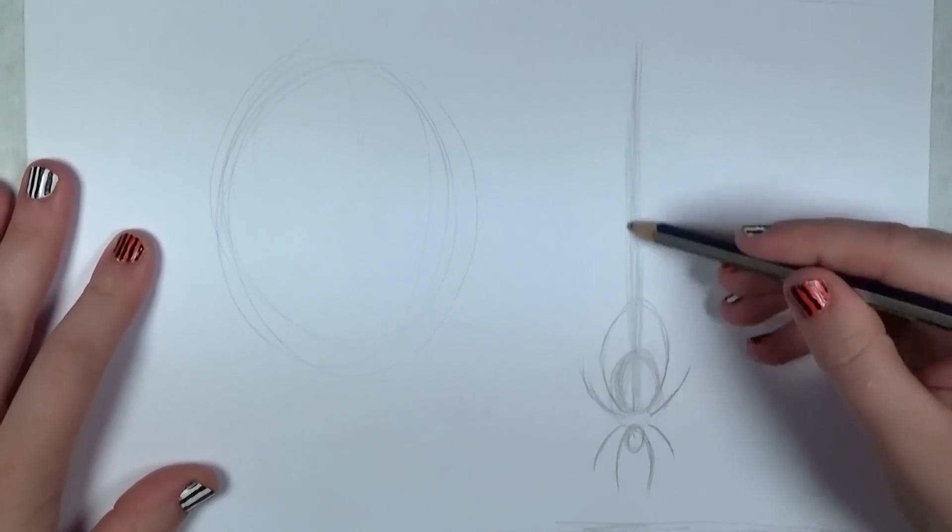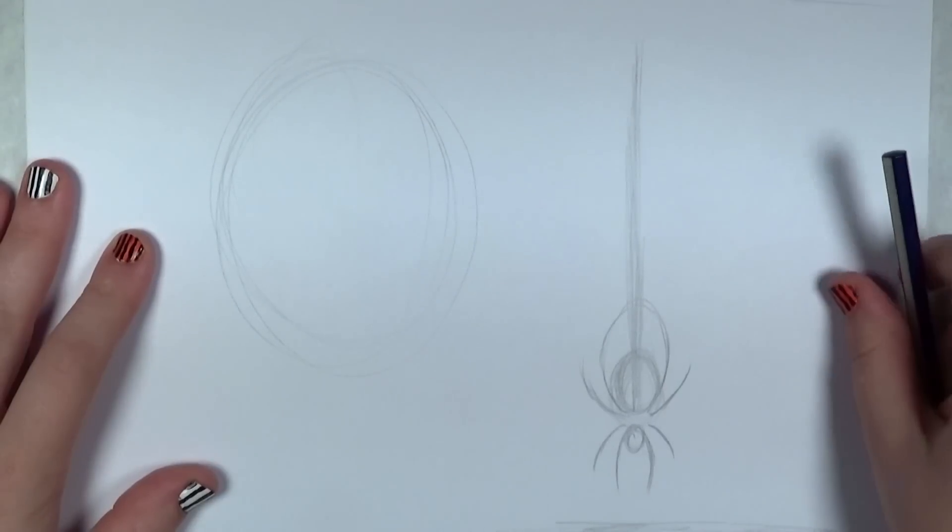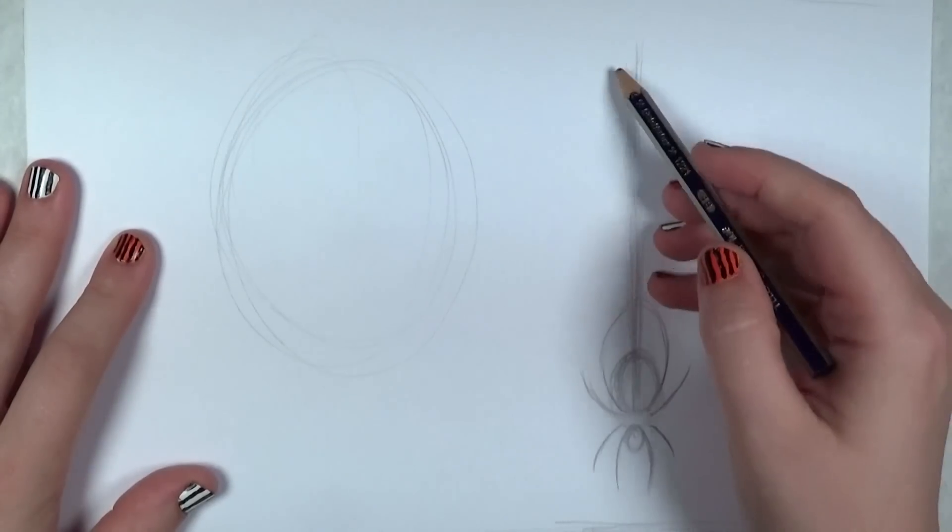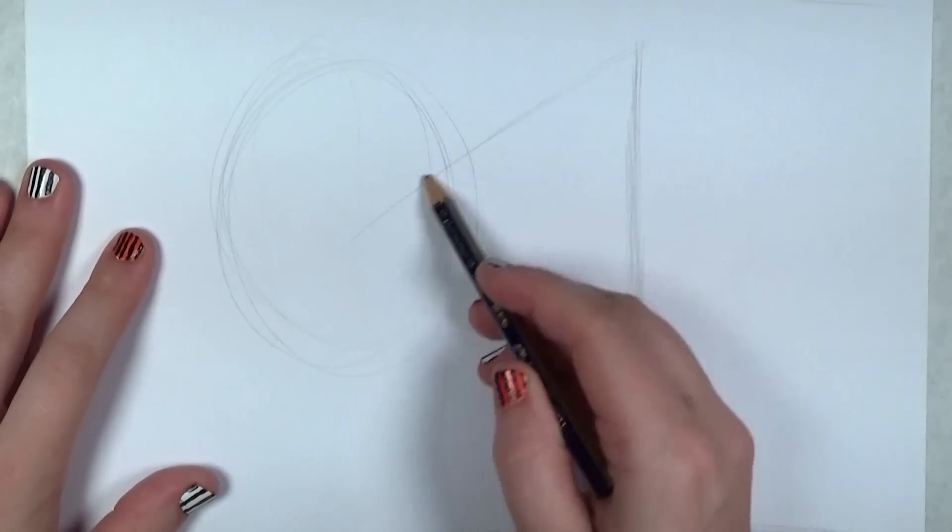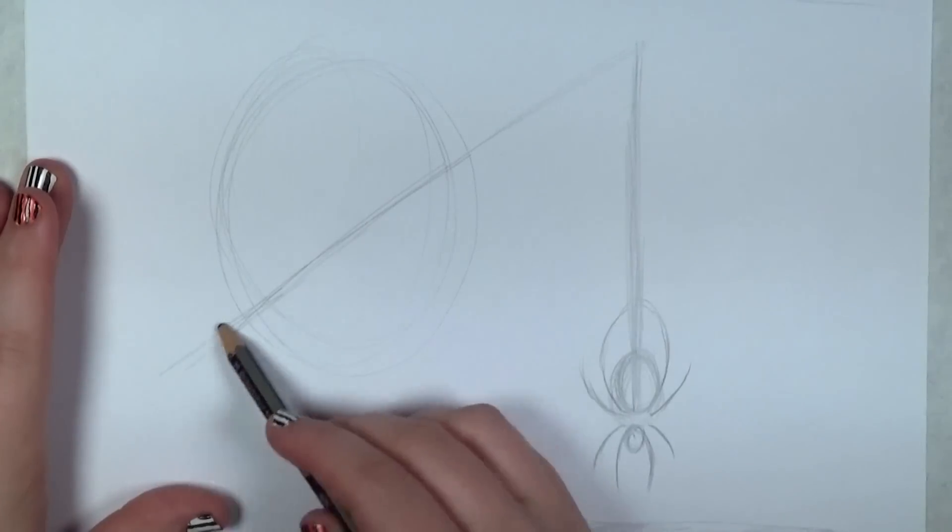Next I'm going to draw the spider web coming from the spider going straight up. I'm doing this freehand, but if you feel more comfortable using a straight edge ruler, go for it.